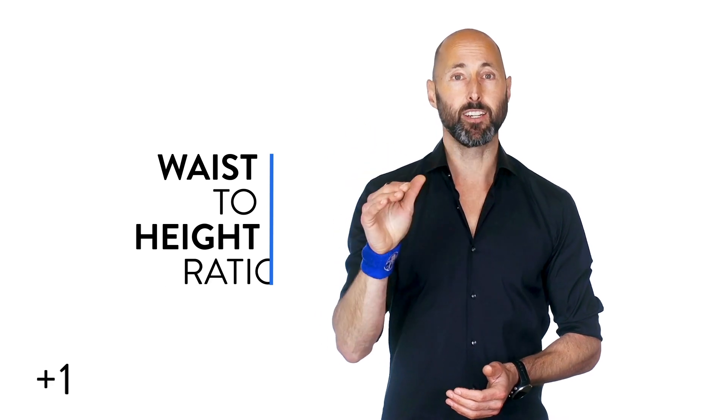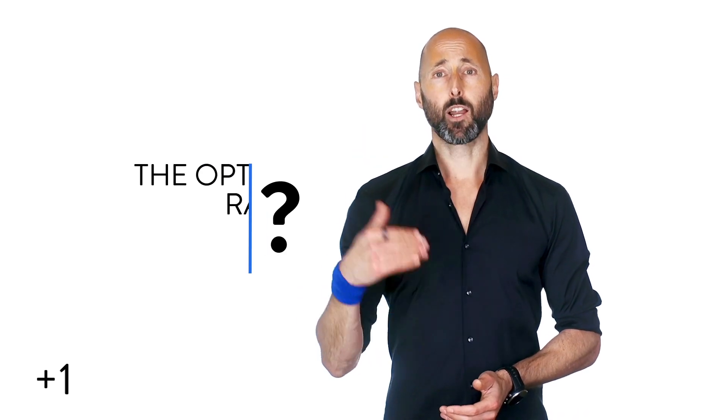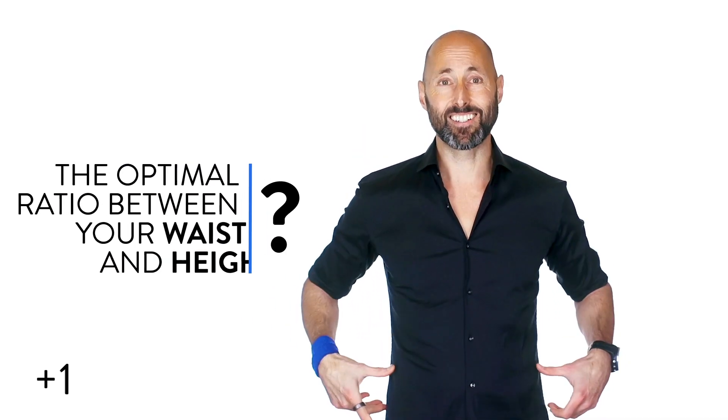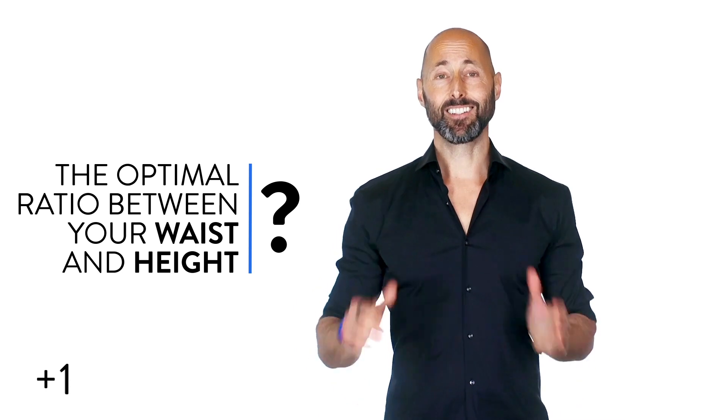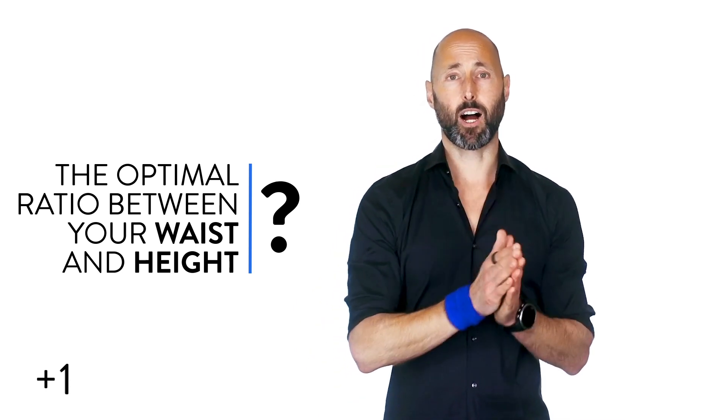W-H-t-R, waist-to-height ratio. We've got a link to an academic paper where you can learn more in the Plus One. Now, the optimal ratio between your waist and your height is less than 0.5.